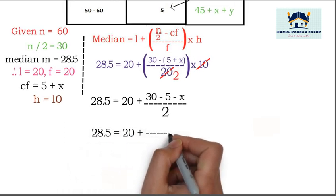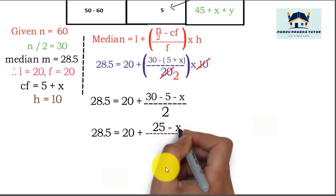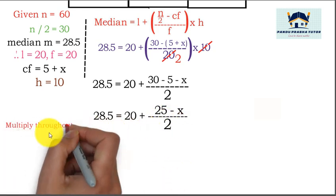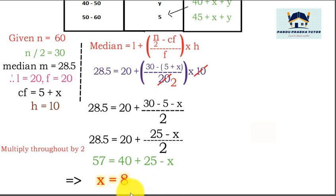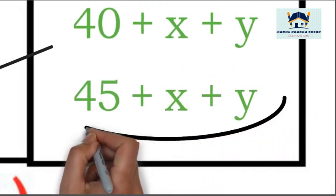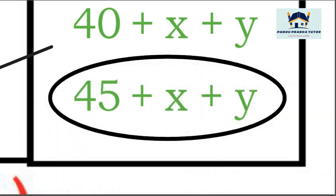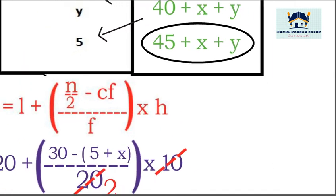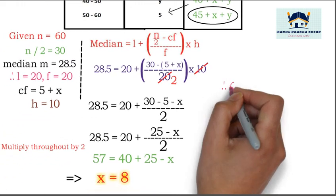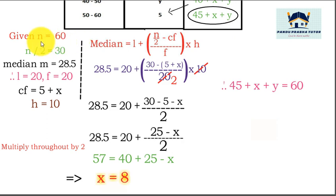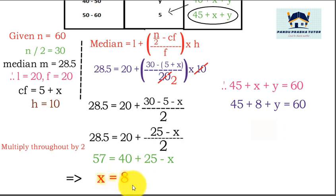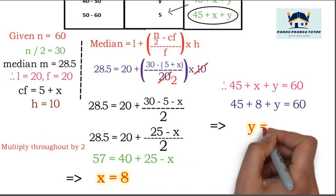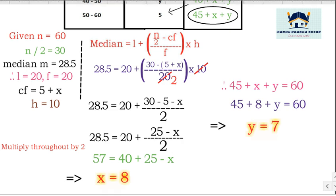Simplifying further: multiplying both sides, 57 = 40 + 25 − x, which gives x = 8. Since the last cumulative frequency equals n, we set 45 + x + y = 60. Substituting x = 8: 45 + 8 + y = 60, therefore y = 7. So x = 8 and y = 7.